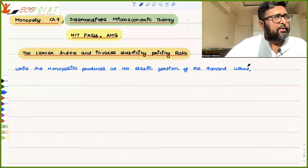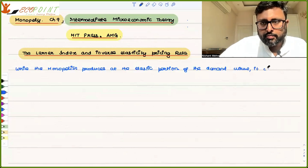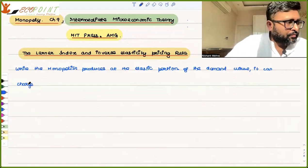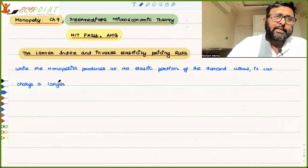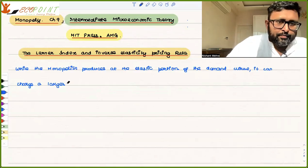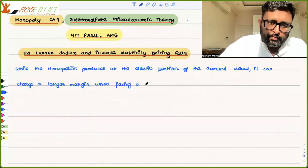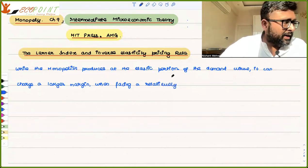If he is going to face a relatively inelastic demand curve, it means that the product has fewer substitutes available, and people will be willing to pay a higher price. So the monopolist can charge a larger margin — meaning how far he can set the price above the cost.